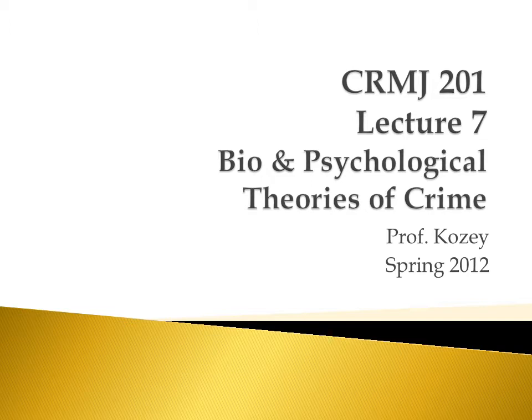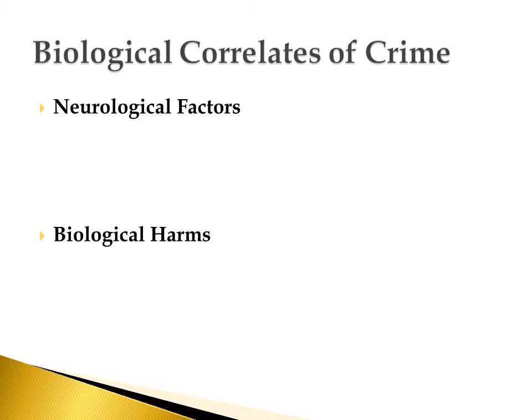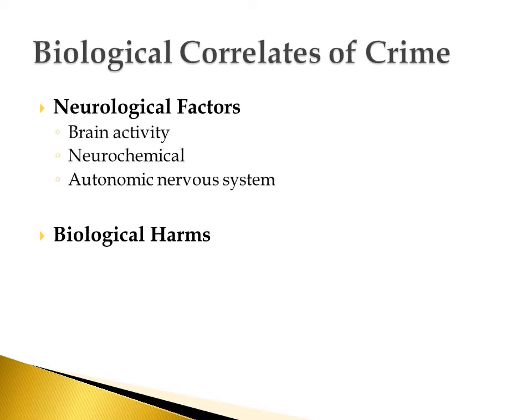Let's start off basically where we ended the last lecture, talking about biological theories of crime. In the modern biological study of criminal behavior, most of the focus is on two different main areas: neurological factors — factors that pertain to brain activity and how different kinds of brain activity might be related to criminal activity — and biological harms. These are things biologically that might impact you either in your development, your diet, or your hormonal functioning — any of those biological elements which might play a role in criminal activity.